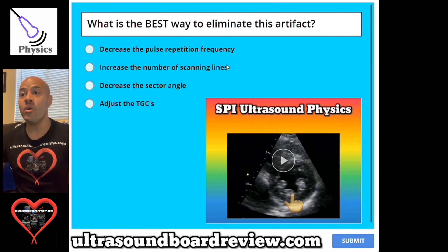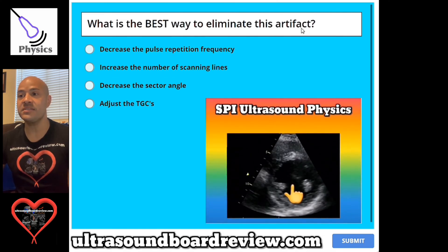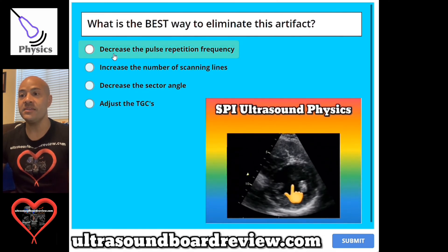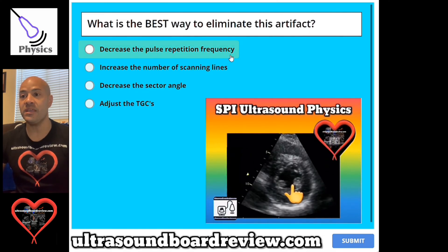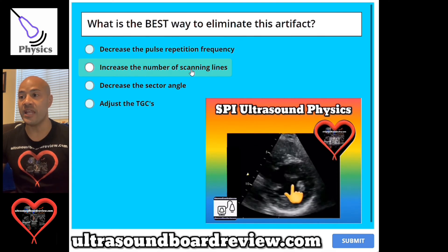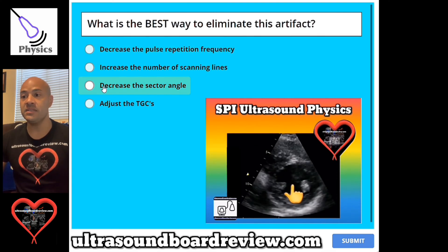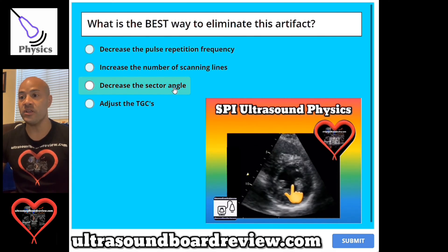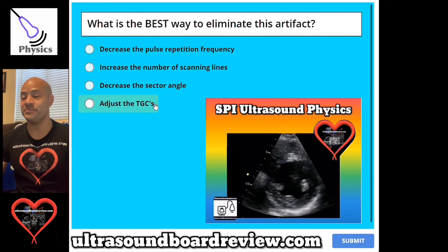Question 76. What is the best way to eliminate this artifact? A, decrease the pulse repetition frequency. B, increase the number of scanning lines. C, decrease the sector angle. Or D, adjust the TGCs.